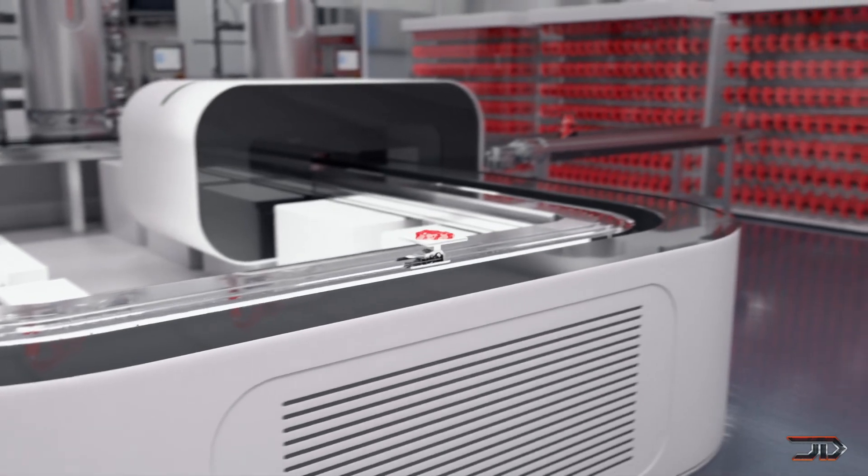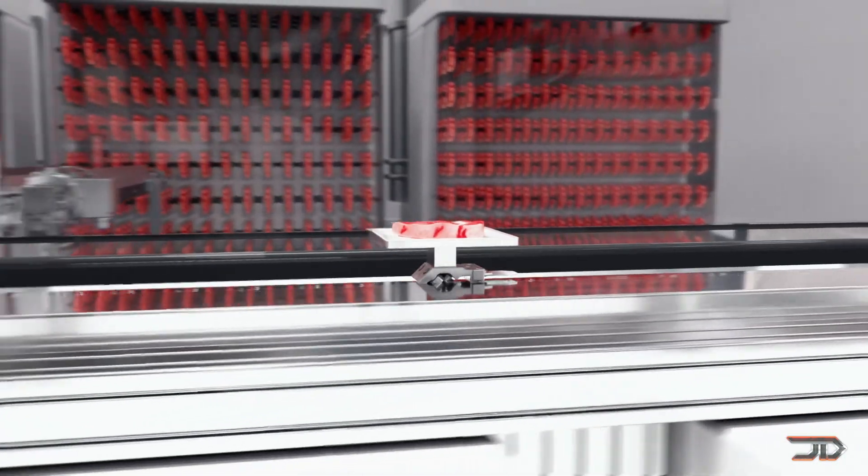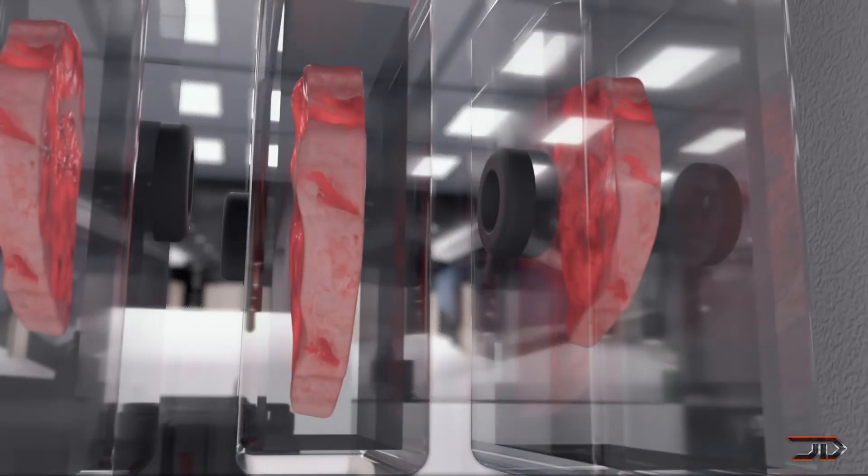The stem cells can then be formulated into a bio-ink. Utilizing a digital model, the company fabricates the steak and places it in an incubator to mature. At this time, the cells then separate into fat and muscle cells.